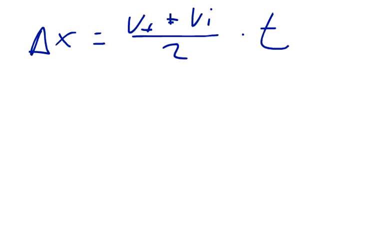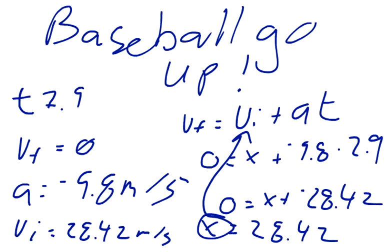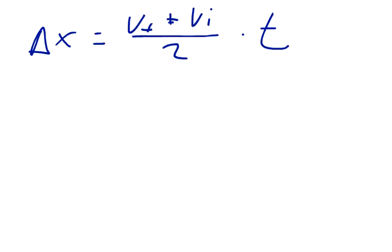We can remember that our change in location, our displacement, is equal to our average velocity times time. Our average velocity could be expressed as Vf plus Vi over 2 times our time. Our final velocity was zero, our initial velocity 28.42.